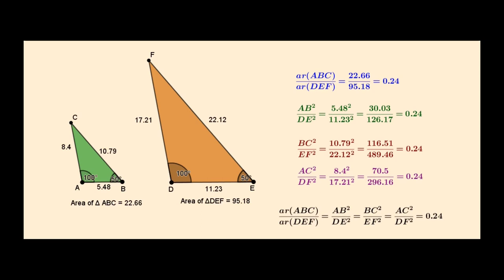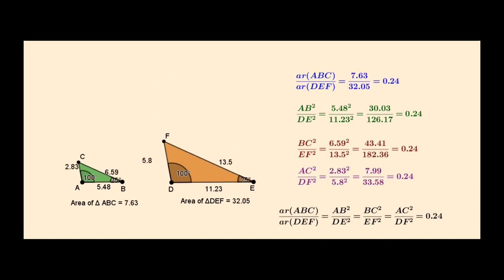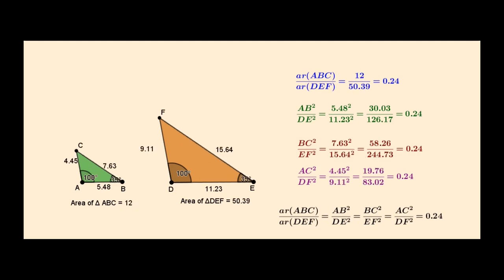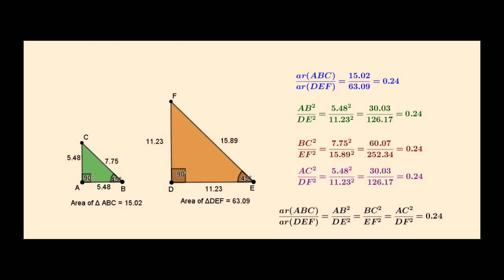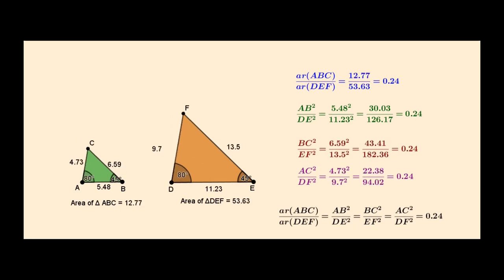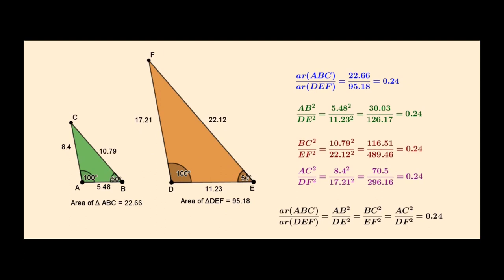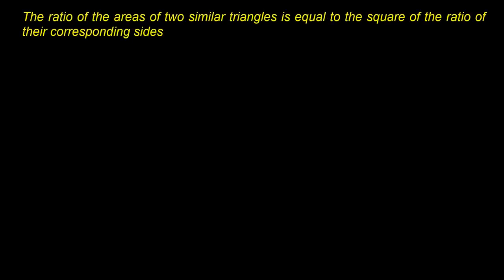Let us change the angle and verify this. You can observe that changing the angle while keeping the two triangles similar, we have the result: the ratio of areas of two triangles is equal to the ratio of the squares of their corresponding sides. Let us also learn the logical proof of this statement.